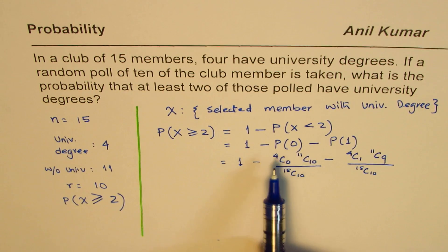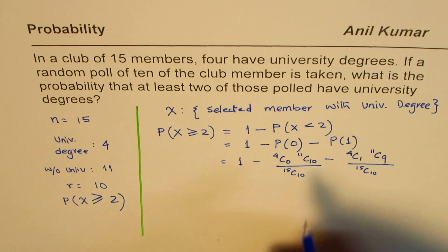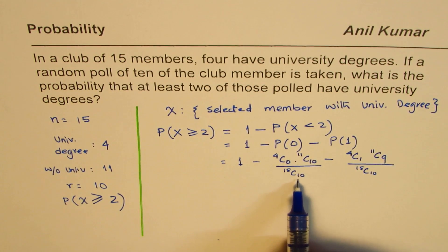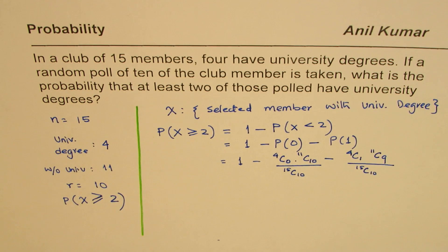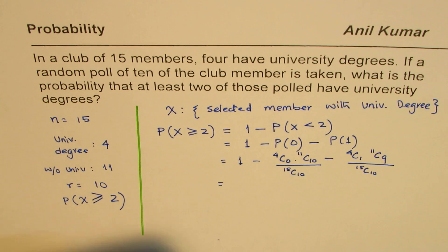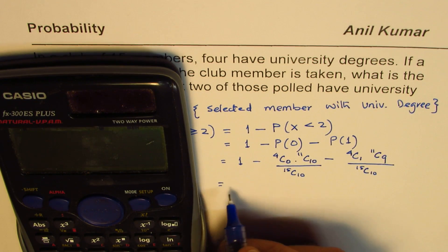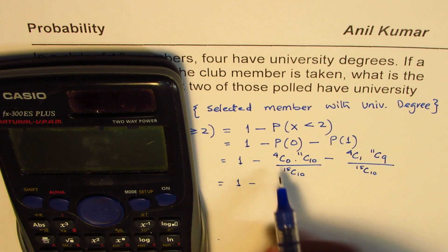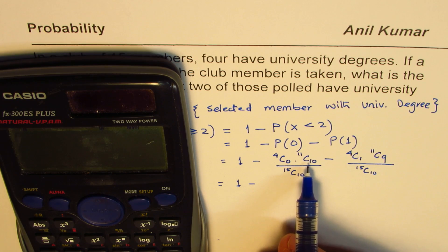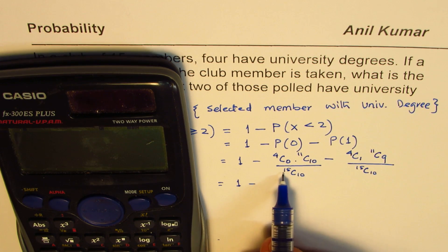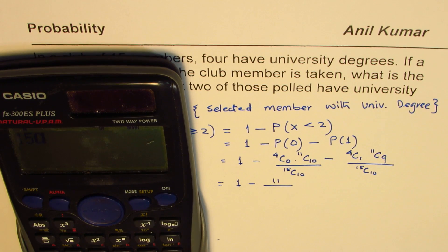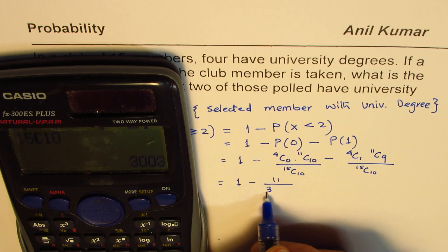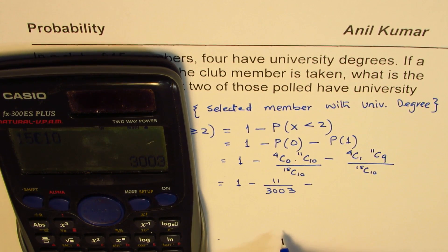So the probability for none of the members having a university degree is 4C0 times 11C10 divided by 15C10. You can calculate these values using a calculator. 4C0 equals 1, and 11C10 equals 11, so that gives us 11 over 15C10. Now, 15C10 equals 3003.